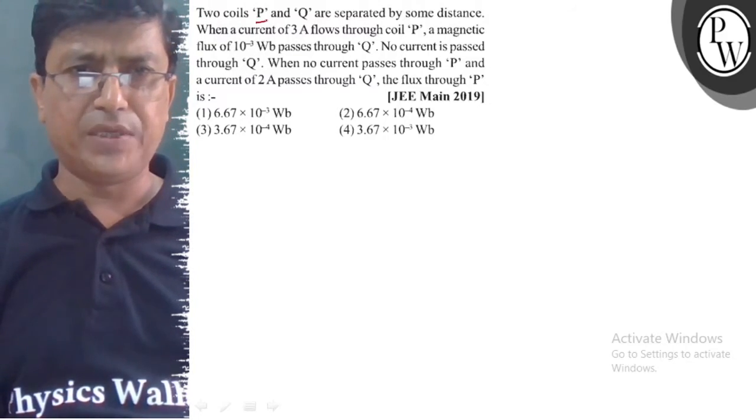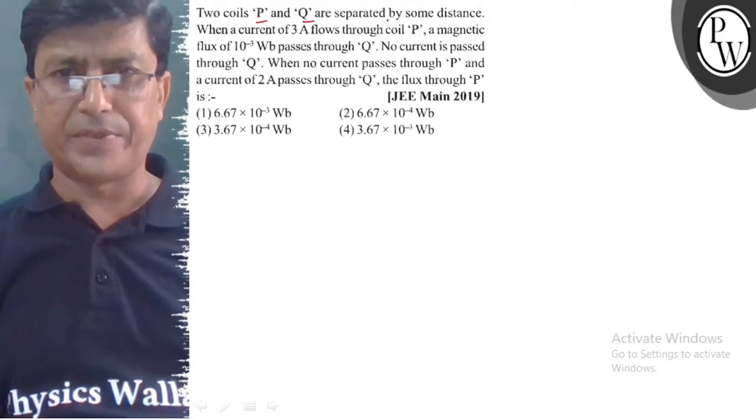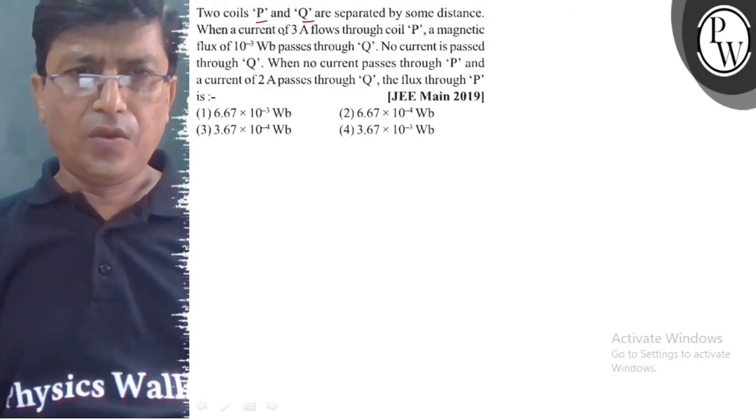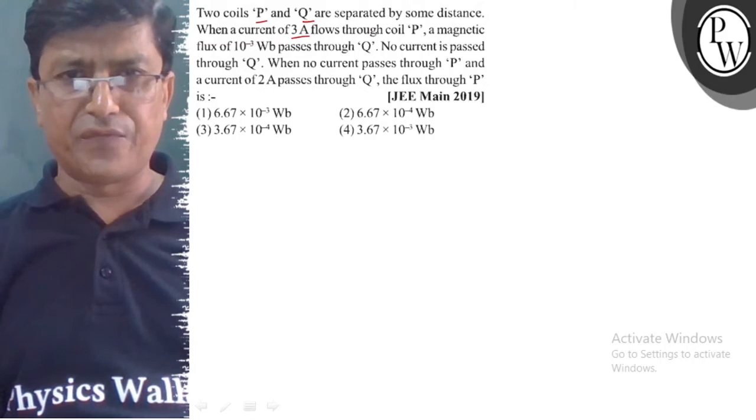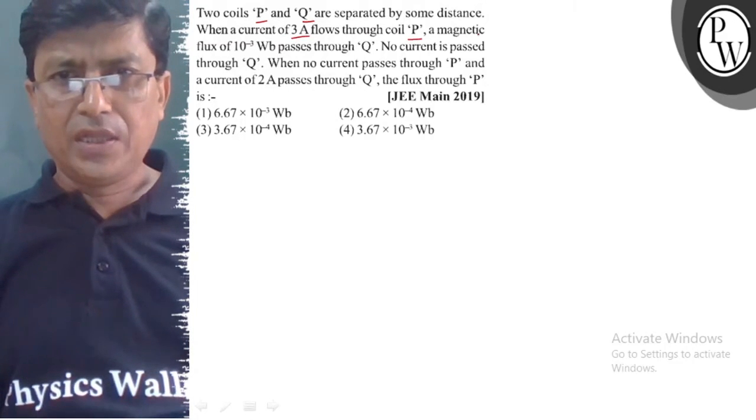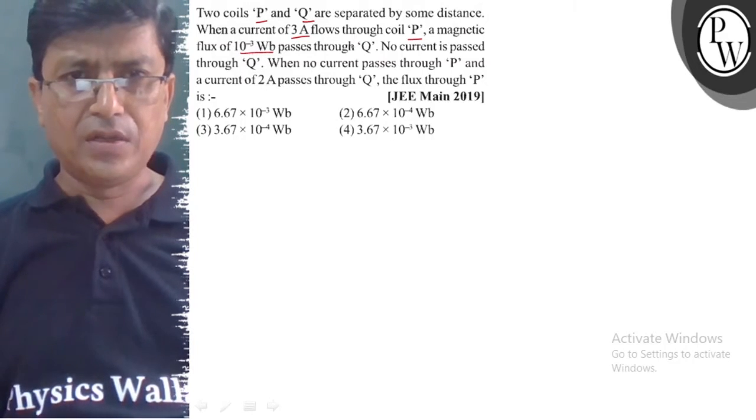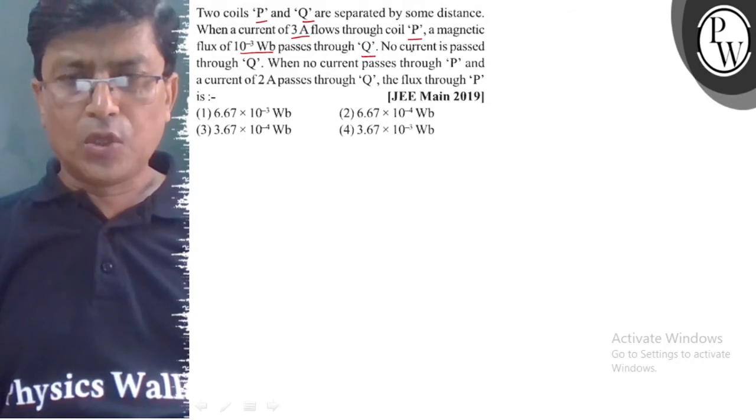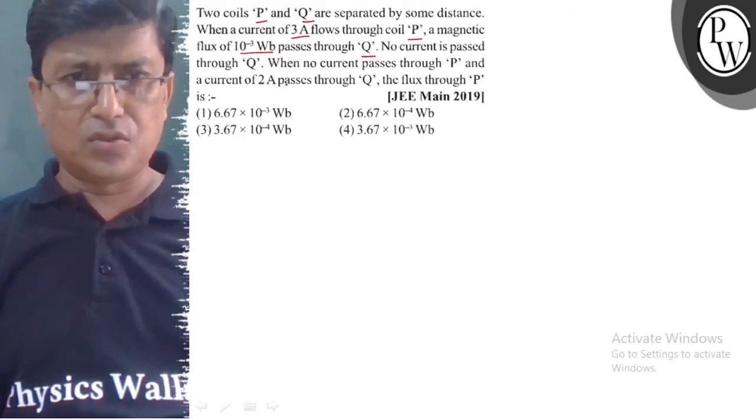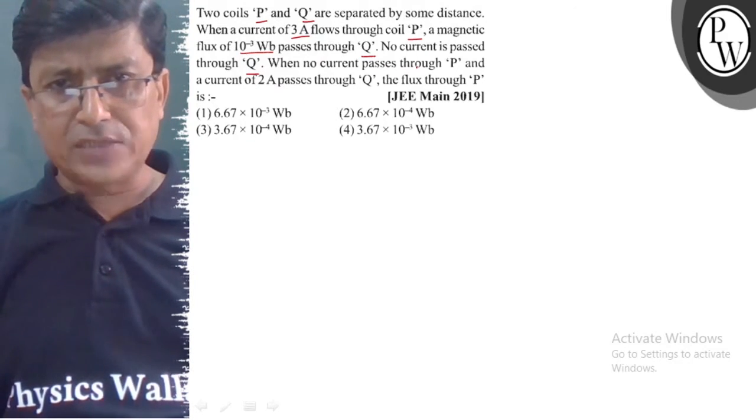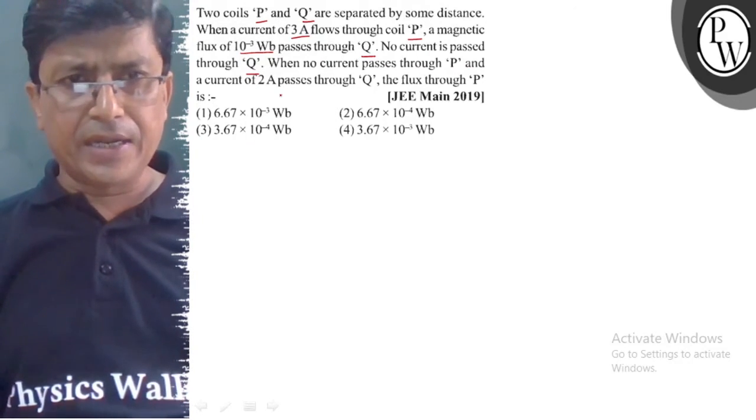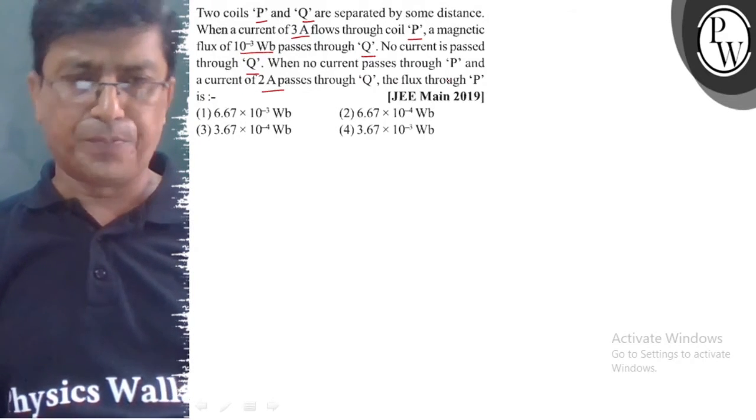The question is that two coils P and Q are separated by some distance. When a current of 3 ampere flows through coil P, a magnetic flux of 10 to the power minus 3 Weber passes through Q. No current is passed through Q. When no current passes through P and a current of 2 ampere passes through Q, the flux through P is.